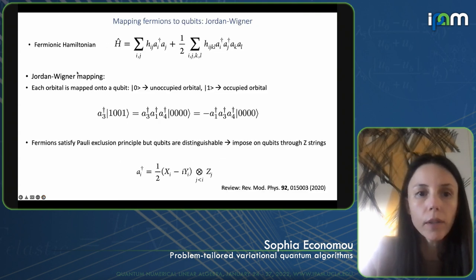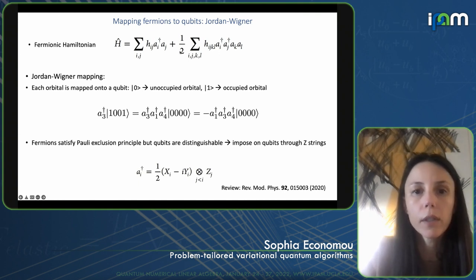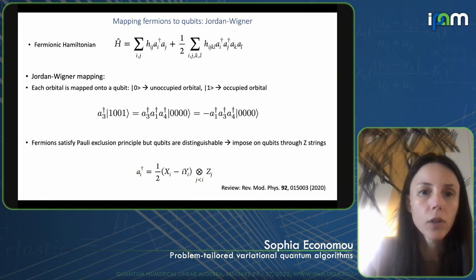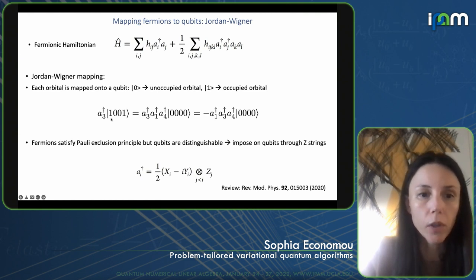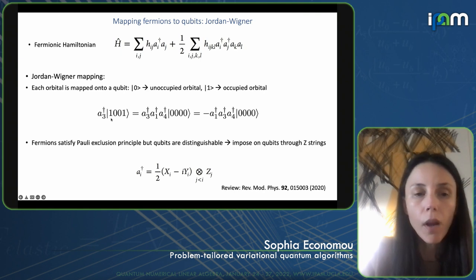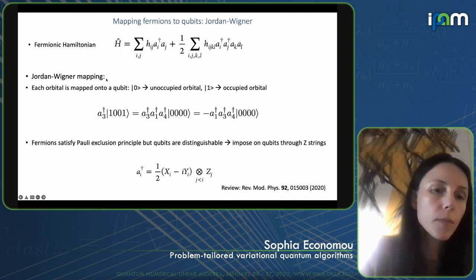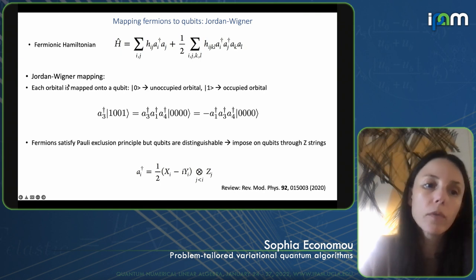What we can do is encode into the mapping from this fermionic system into our qubits this anti-symmetrization feature of the wave function — in other words, the anti-commutation relations of the fermionic operators. There are many ways to do this, but I'll be exclusively talking about the Jordan-Wigner mapping.